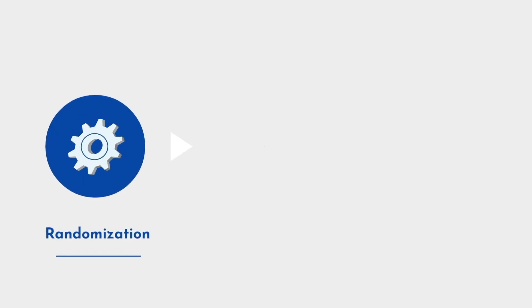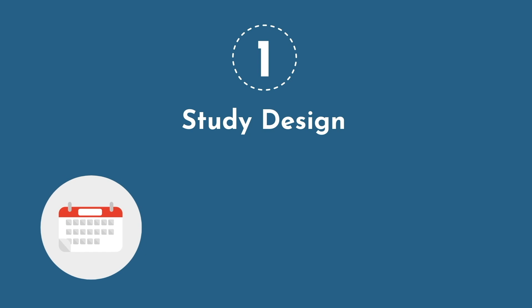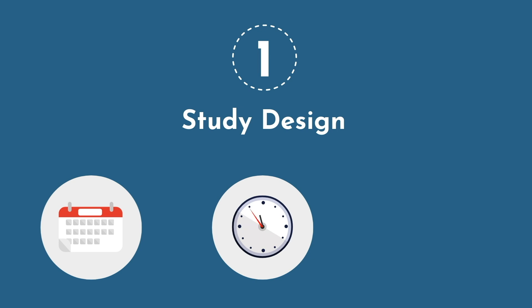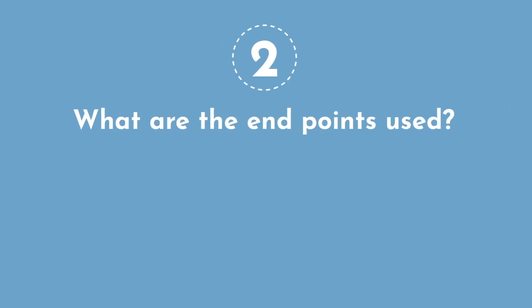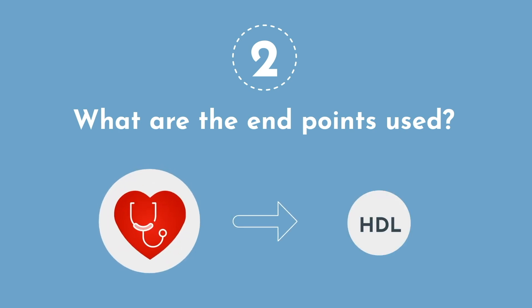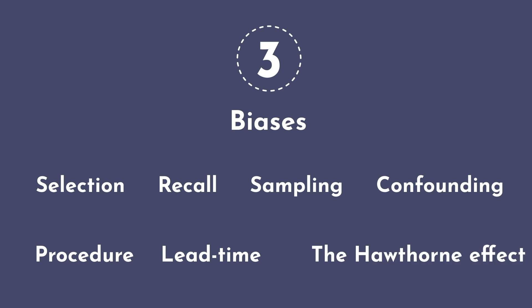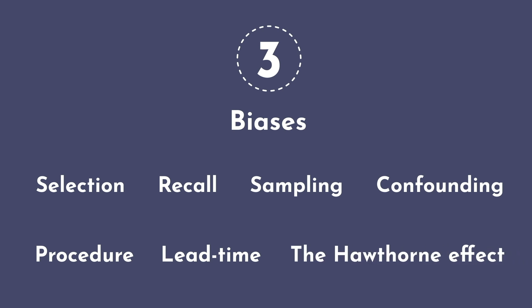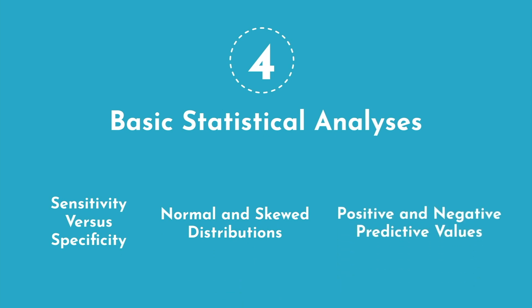Most people know about randomization, placebo-controlled, and single or double-blinded studies, but there is so much more nuance to it. Here are a few examples. First, study design: is the study retrospective, meaning looking back historically, or prospective, starting with individuals that are then followed over time? Is it a case control, cohort, or cross-sectional study? Number two, what are the endpoints used? If the study draws conclusions about heart disease but only uses HDL as a surrogate marker, understand that the surrogate is just that — an imperfect proxy. Number three, biases — selection, recall, sampling, confounding, procedure, lead time, and the Hawthorne effect are all biases you should familiarize yourself with. And number four, basic statistical analyses: sensitivity vs. specificity, normal and skewed distributions, positive and negative predictive values, etc.